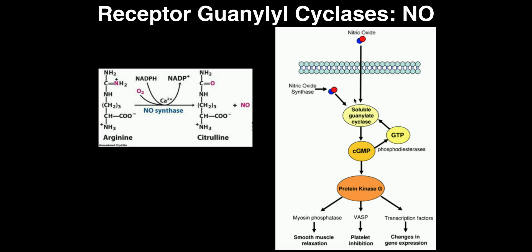To summarize: nitric oxide crosses the membrane, activates guanylate cyclase, which converts GTP to cyclic GMP. Cyclic GMP then activates protein kinase G, producing a series of phosphorylation cascades. Much like cyclic AMP, cyclic GMP is degraded by a phosphodiesterase — specifically cyclic GMP phosphodiesterase — which converts cyclic GMP into GMP, terminating its activity and preventing prolonged cyclic GMP signaling.